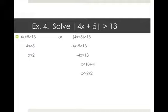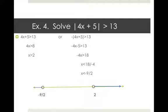We're ready to put both statements on the same number line. X greater than 2 means an open circle at 2, shading to the right. X less than negative 9 halves means an open circle at negative 9 halves, shading to the left. Our final solution is X greater than 2 or X less than negative 9 halves.